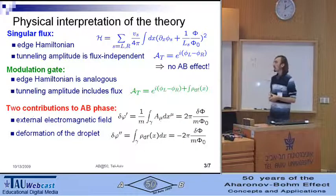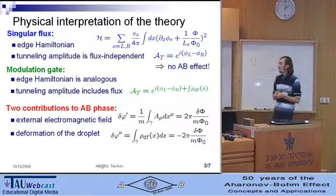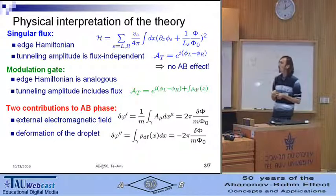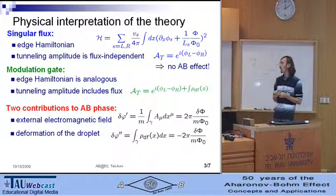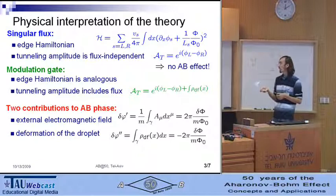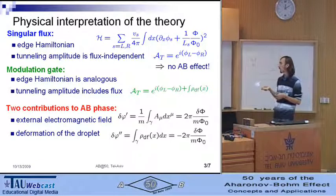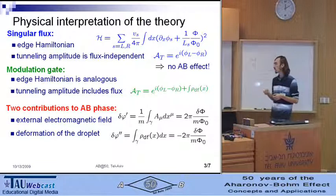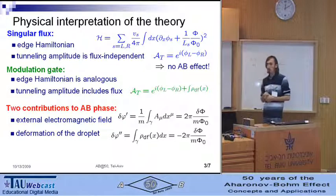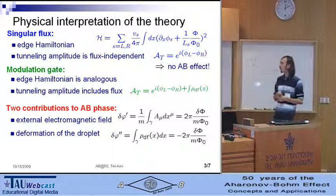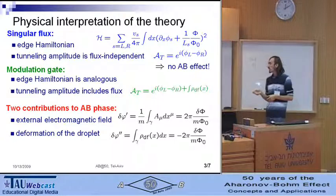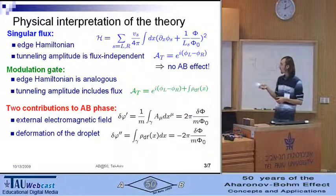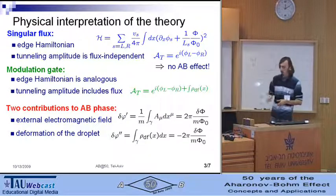We can give the physical interpretation to this result if we take into account that there are two contributions to Aharonov-Bohm phase in case of quantum Hall effect. The first contribution is due to external magnetic flux, while the second contribution is due to the physical deformation of the quantum Hall droplet. Locally, these two effects can be different, but globally, they exactly cancel each other in case of singular flux.